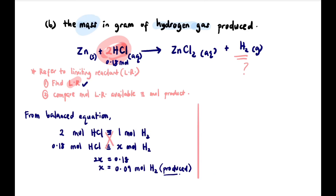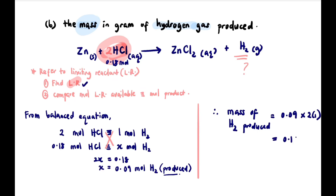We are not done yet because the question asks for mass. Mass of H₂ produced = moles × molar mass = 0.09 moles × 2 g/mol = 0.18 grams of H₂ produced.